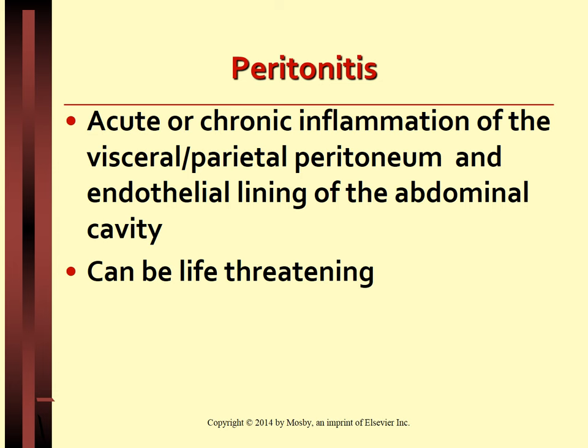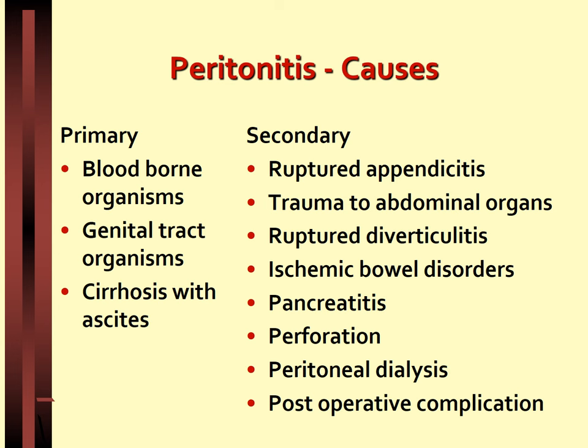Primary peritonitis occurs when disease-causing organisms gain entry into the peritoneal cavity. Intestinal and gastric contents irritate the normal sterile peritoneum, which produces an initial chemical peritonitis. Once bacteria gain entry, it is followed by bacterial peritonitis in just a few hours. The resulting inflammatory response causes vasodilation and increased capillary permeability, allowing leukocytes and subsequent phagocytosis of the offending organism.